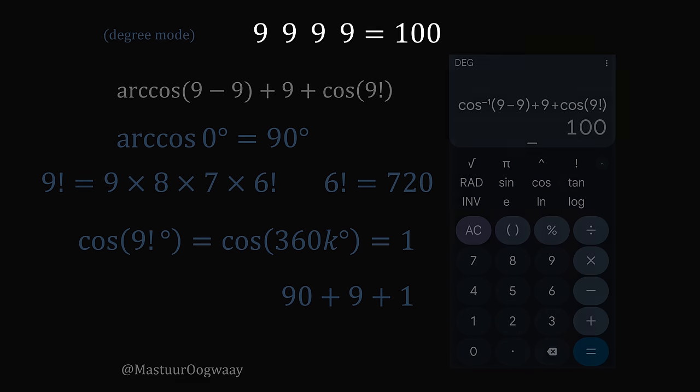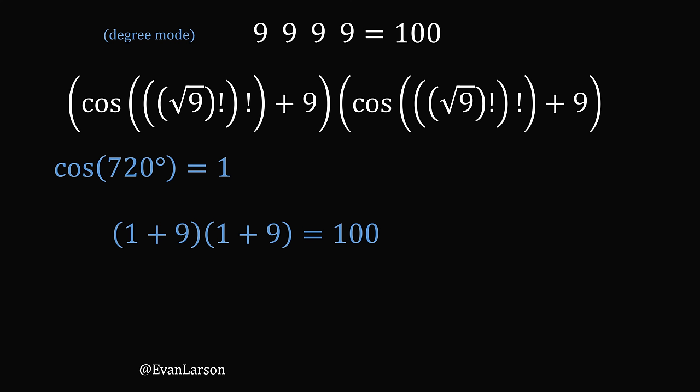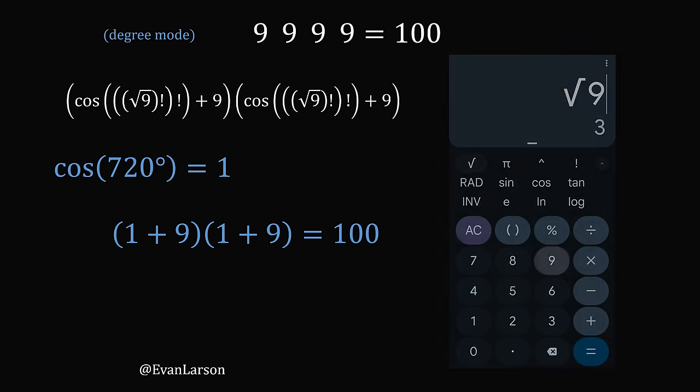Here's another quite remarkable solution. We have the square root of 9, take the factorial of that result, then take the factorial again, add 9, and multiply it by the same thing. Make sure your calculator is in degree mode. Square root of 9 equals 3, 3 factorial equals 6, 6 factorial equals 720. Cosine of 720 degrees equals 1. So this works out to (1 plus 9) multiplied by (1 plus 9), which equals 100. It does work on the calculator.